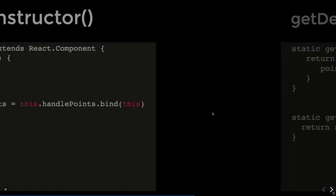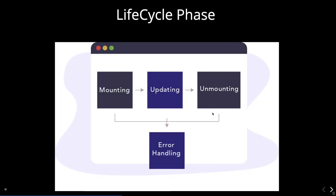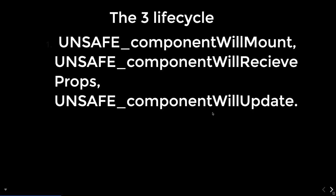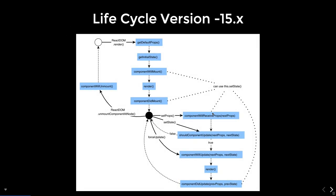To summarize what we covered: we looked at what lifecycle methods are changing, what is deprecated, and what new methods to start using. componentWillMount, componentWillReceiveProps, and componentWillUpdate are deprecated. They are replaced by the single method getDerivedStateFromProps, which can serve as a replacement for all three. In the coming videos, we will see how the new lifecycle methods fit into the mount, update, and unmount phases.